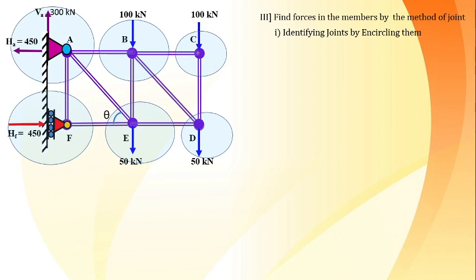For joint C, the 100 kN load and members BC and CD are present. For joint B, the 100 kN load and members AB, BC, BD, BE are present. We assume directions for all member forces. Since each joint is a concurrent force system, only two conditions of equilibrium (sigma Fx and sigma Fy) can be applied, meaning we need at most two unknowns per joint.